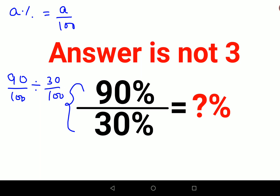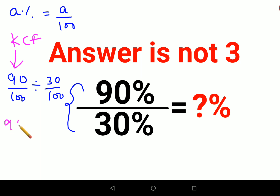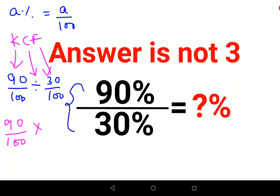Now please remember when you have to divide fractions, you have to remember the rule of K, C, F — that means keeping the first fraction as it is. So we keep 90 upon 100 as it is, changing the division sign to multiplication, and then flipping or taking the reciprocal of 30 upon 100, which becomes 100 upon 30.